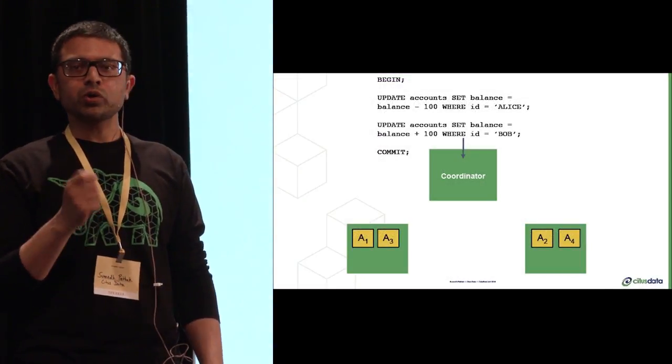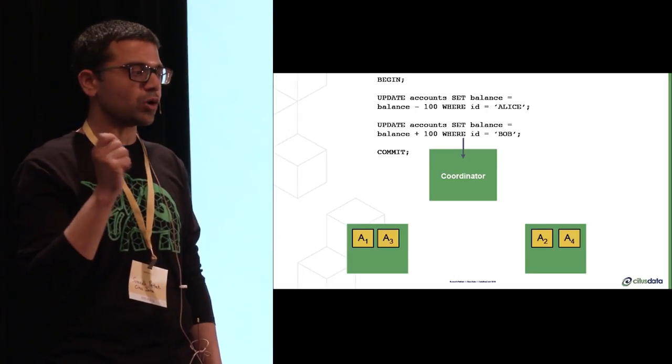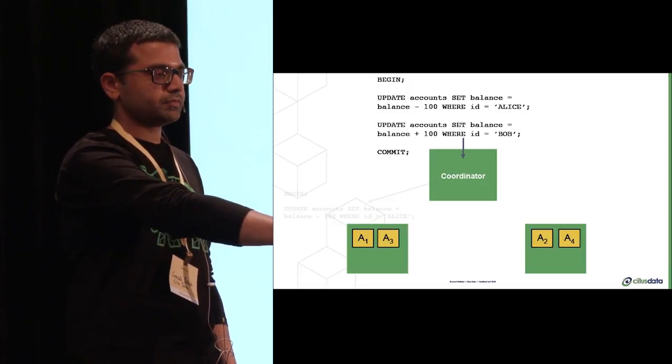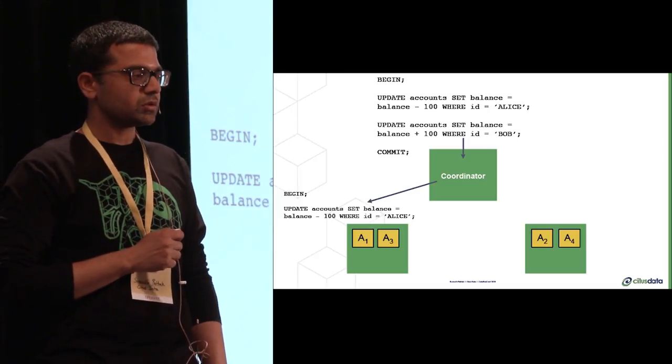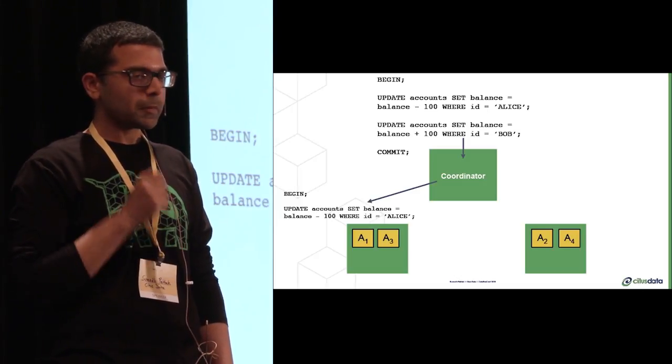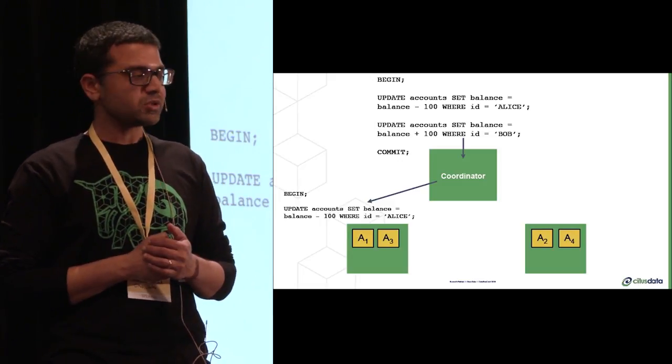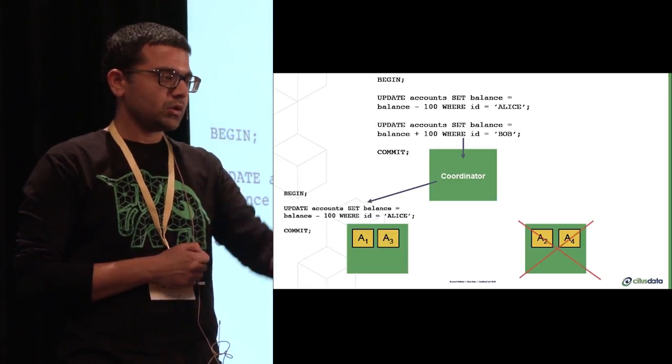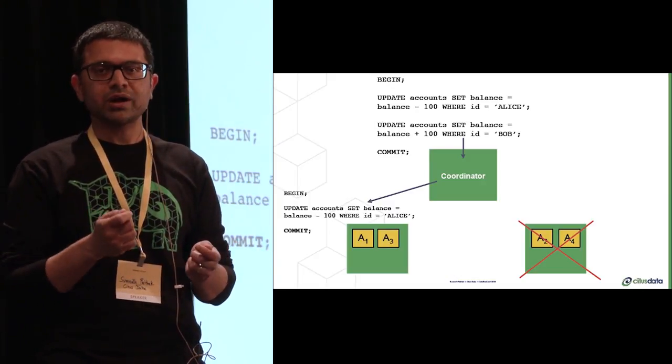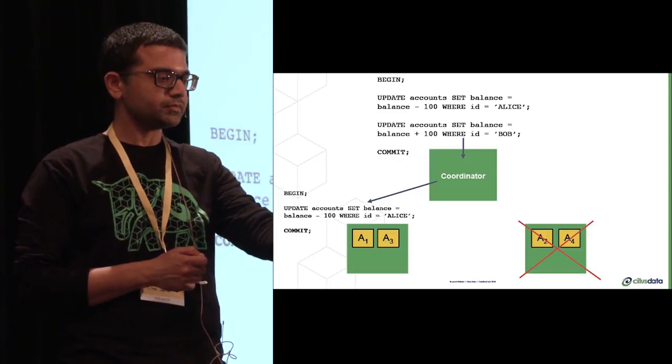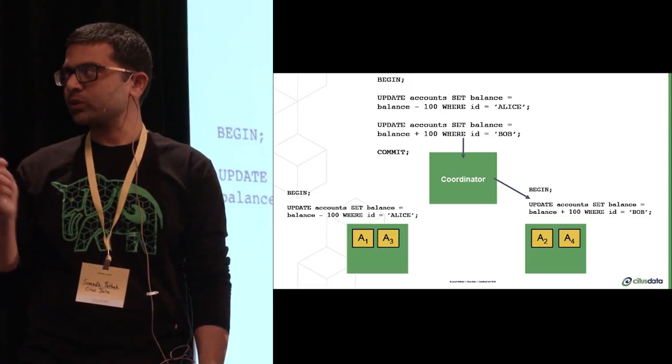So these commands get issued to the coordinator first. Let's assume Alice's data on the first node, and Bob's data lives on the second node. So the coordinator first issues a begin transaction command to node one. It decrements data from Alice's account. So at this point, can we commit this transaction on node one? Not yet, because what if node two has failed at this point? Then we'd have deducted data, but not added to Alice's account.